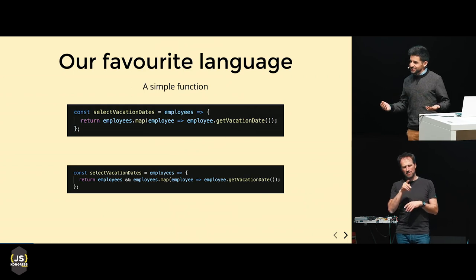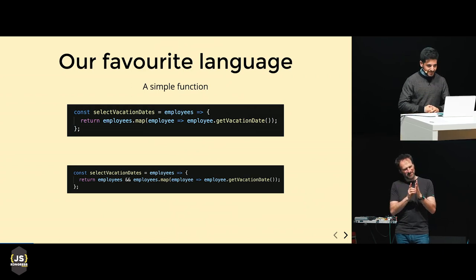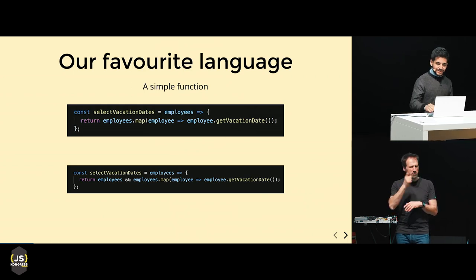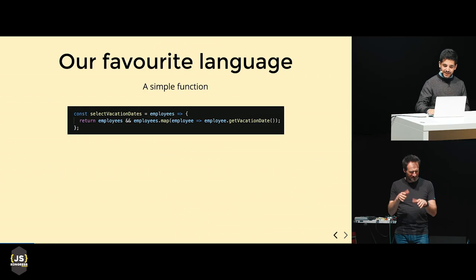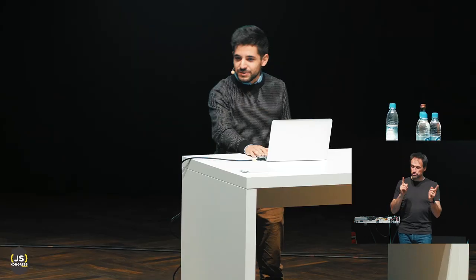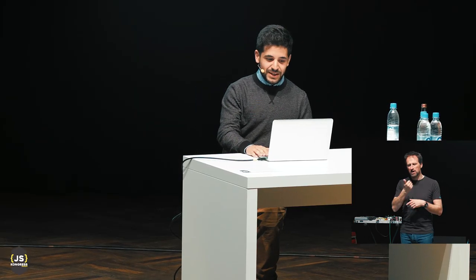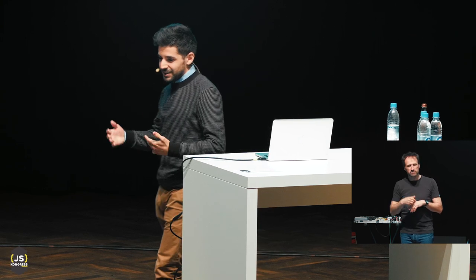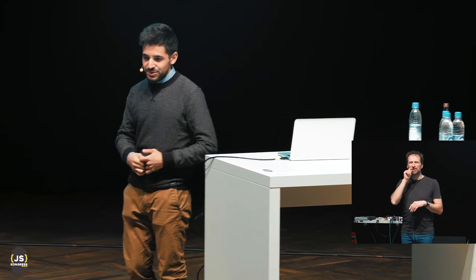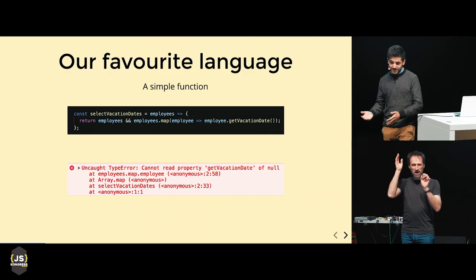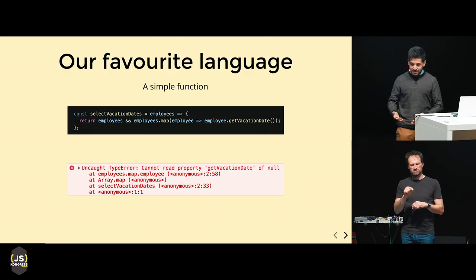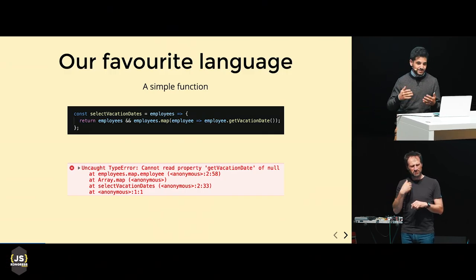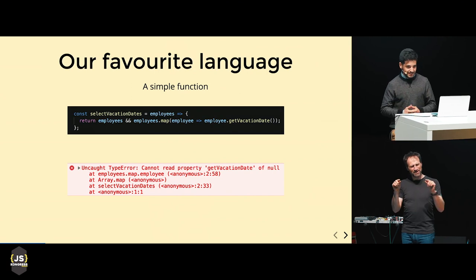I'm sure most of you have done this at some point. So again, we had this. And obviously, sometime later, we get 'cannot read property blah of null'. Someone was passing an array, but it had the wrong kind of thing.